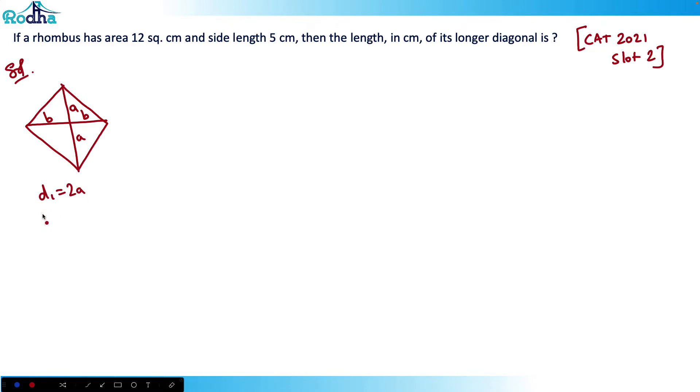It has area 12 square centimeters. Area of rhombus equals half into d₁d₂ equals 12. That is half into 2A into 2B equals 12. Therefore A into B I'll be getting as 6. So A times B equals 6.